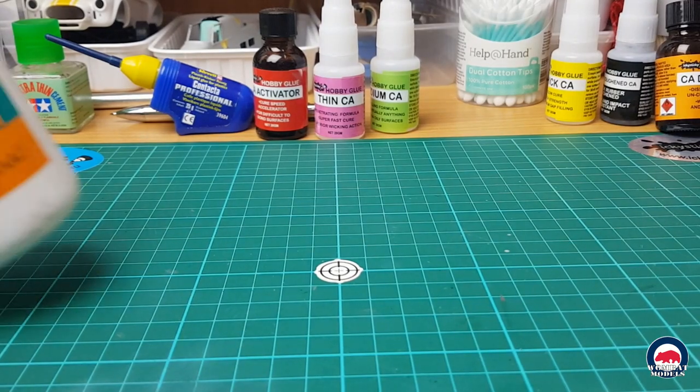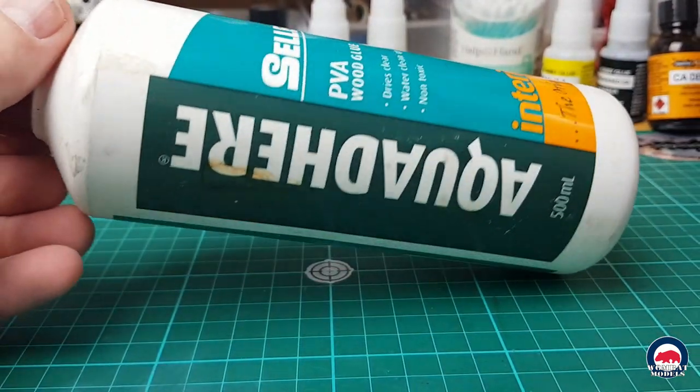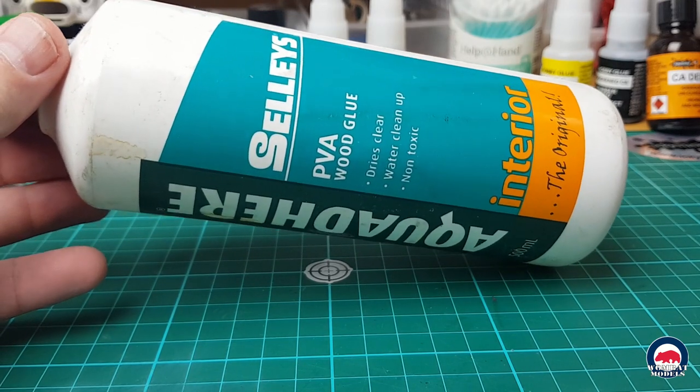And when it comes to sticking things like clear parts and transparencies, I use the old Aquadhere PVA wood glue.